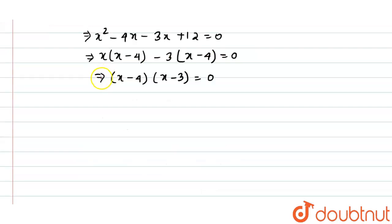Now product of two roots equals 0, that means any of them equals 0. So if x - 4 equals 0 that means x equals 4, or x - 3 equals 0 that means x equals 3.